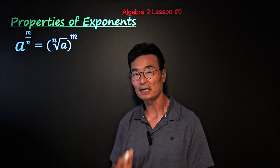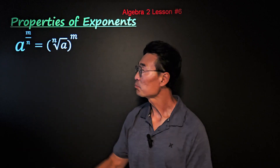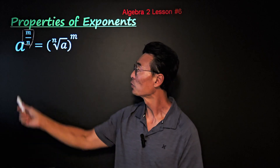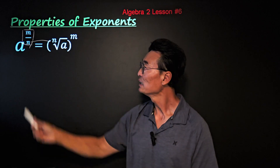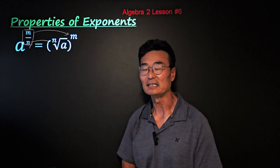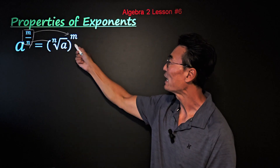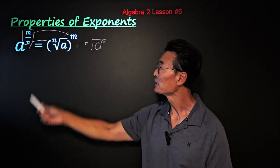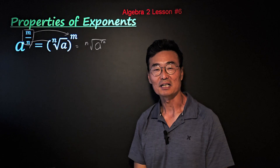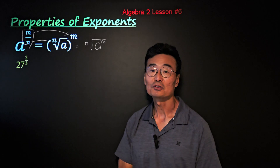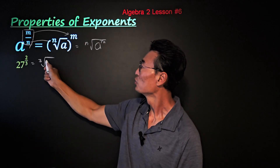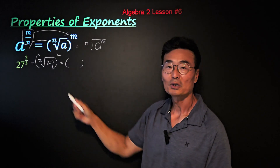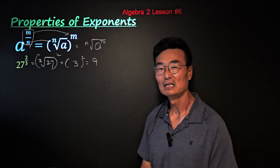Here are some rules or properties of exponents you should know. If we have a to the m over n power, where the exponent is a fraction, we change that into the nth root of a, all to the m power. The denominator is the root portion and the numerator is the power portion. For example, 27 to the two-thirds power becomes the cube root of 27, then taken to the second power. The cube root of 27 is 3, and 3 squared is 9.